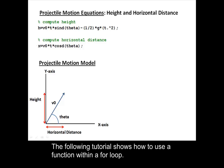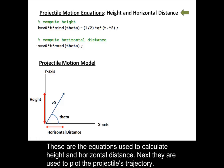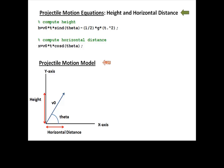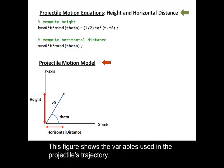The following tutorial shows how to use a function within a for loop. These are the equations used to calculate height and horizontal distance. Next, they are used to plot the projectile's trajectory.